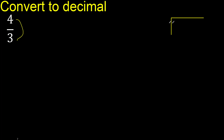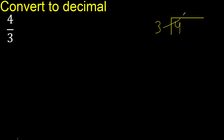4 divided by 3. 4 is not less, therefore with 4: 3 multiplied by which number is nearest to 4 but not greater? 3 multiplied by 2 is 6, which is greater. 3 multiplied by 1 is 3. 4 minus 3 is 1.